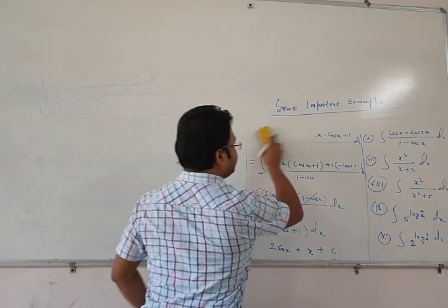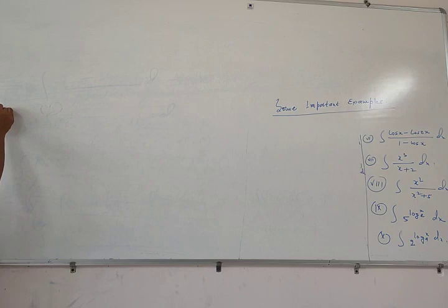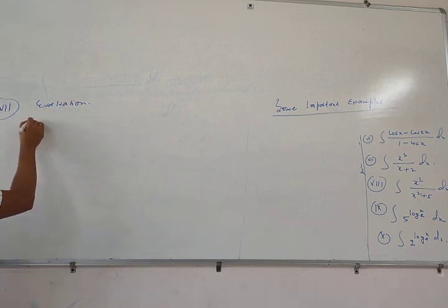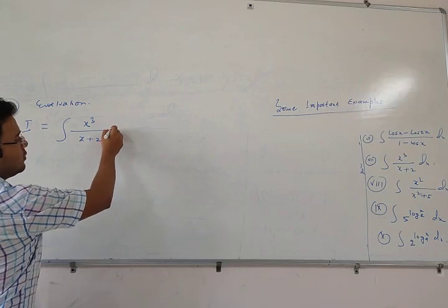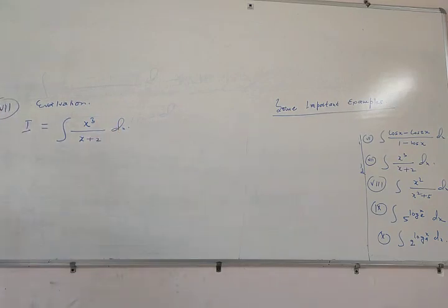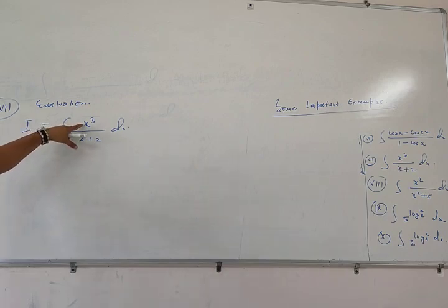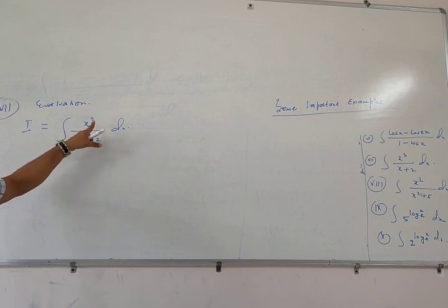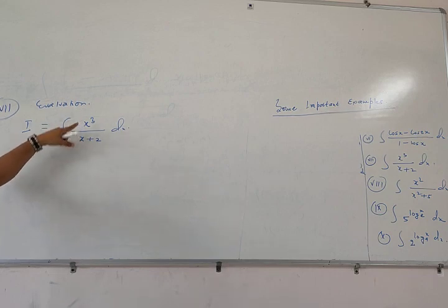Now we are going to evaluate the next integral, which is question number 7. Evaluation: I equals integration of x³/(x + 2) with respect to x. Here we see this is a rational expression, and this is an improper fraction because the degree of numerator is greater than the degree of denominator.